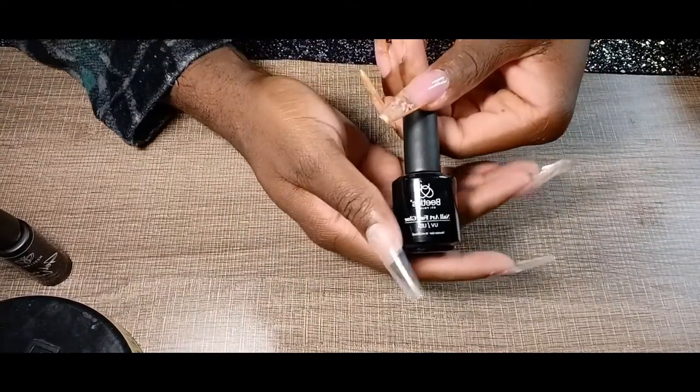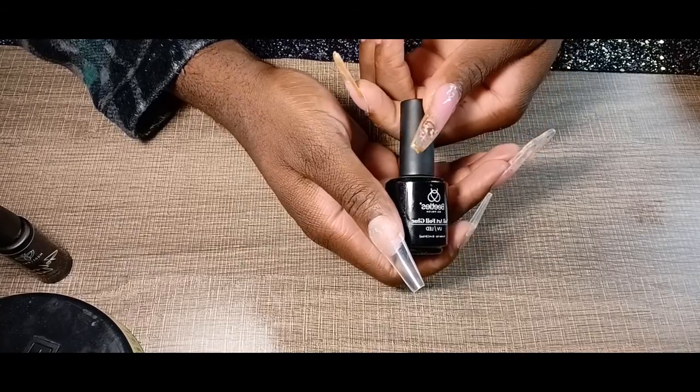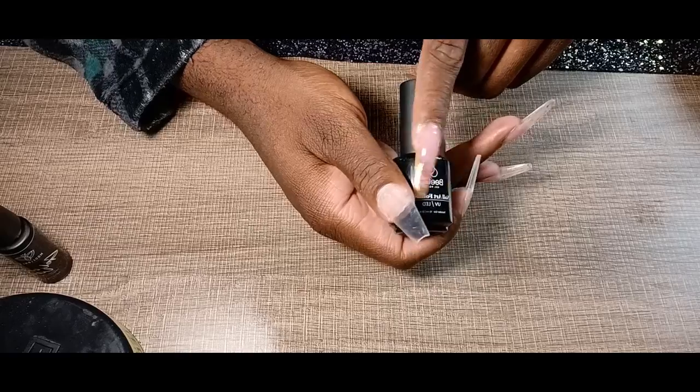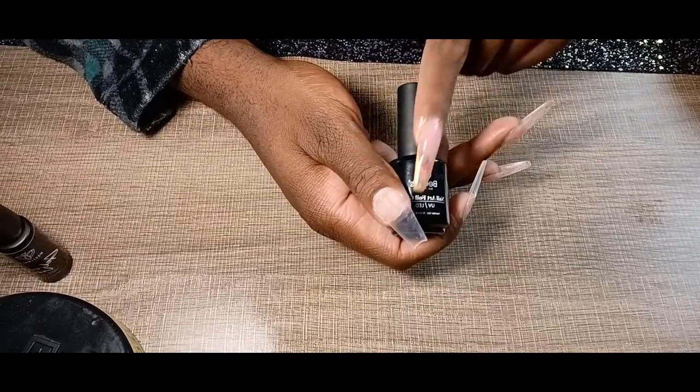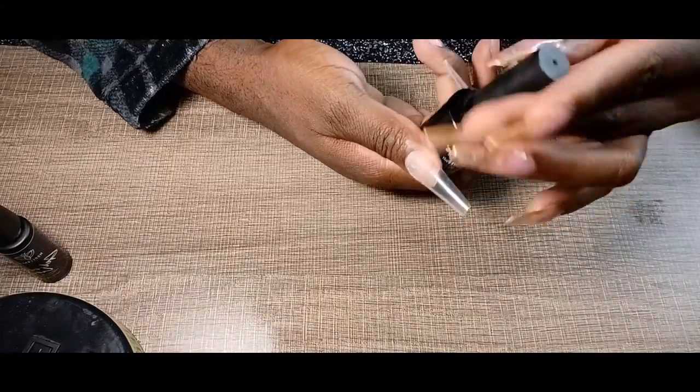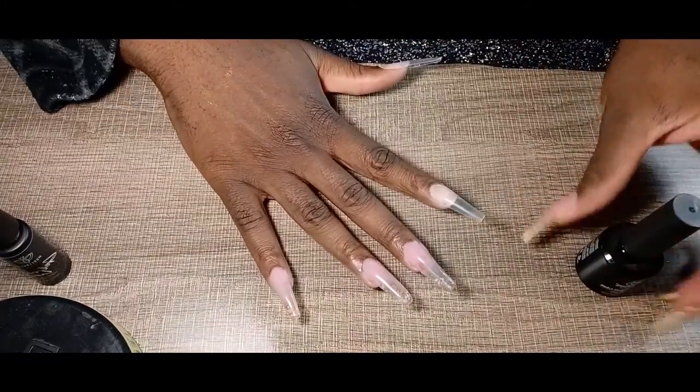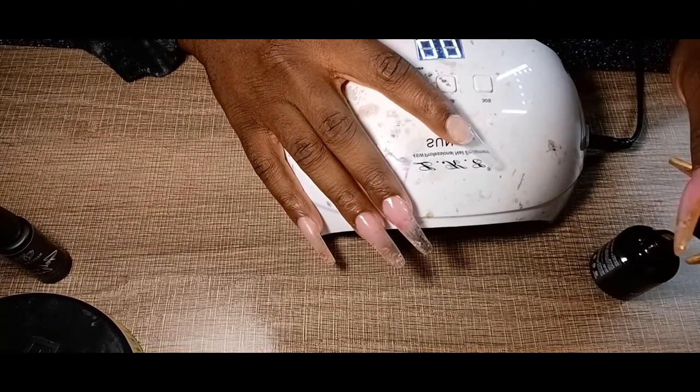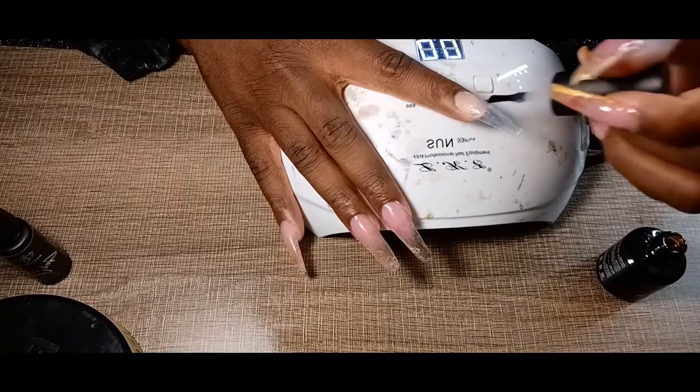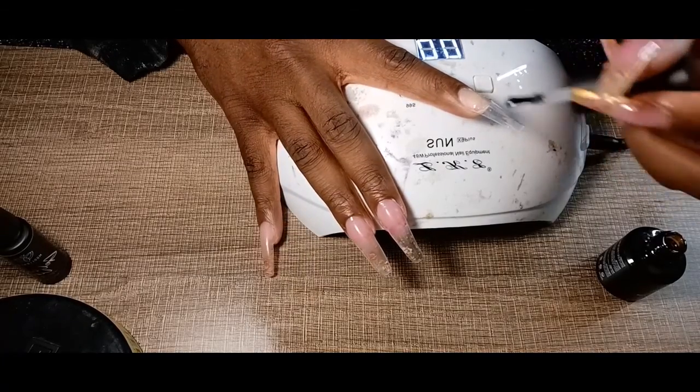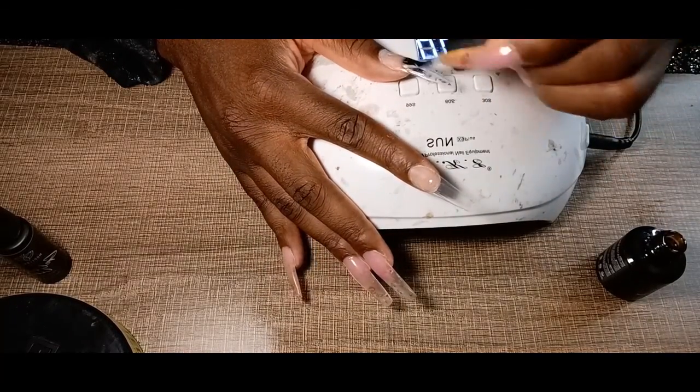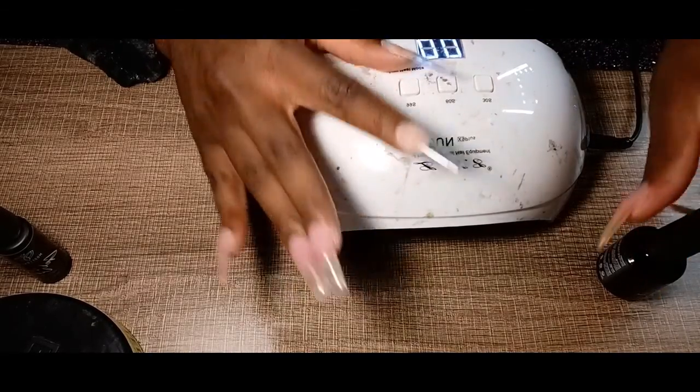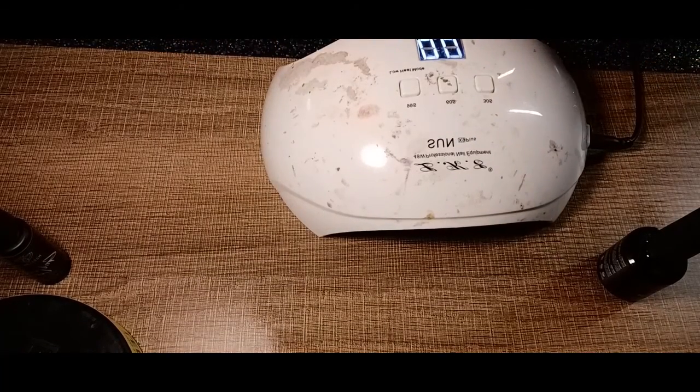I use the Beetles Nail Art Foil Glue. This is UV and LED. It's very important depending on what type of lamp you have so it works for both. We're going to put them on the nails. Get my handy dandy nail lamp out. I'm just going to put it mostly on the tip because that's where I want it to be at. And I'm just going to cure that for 60 seconds.